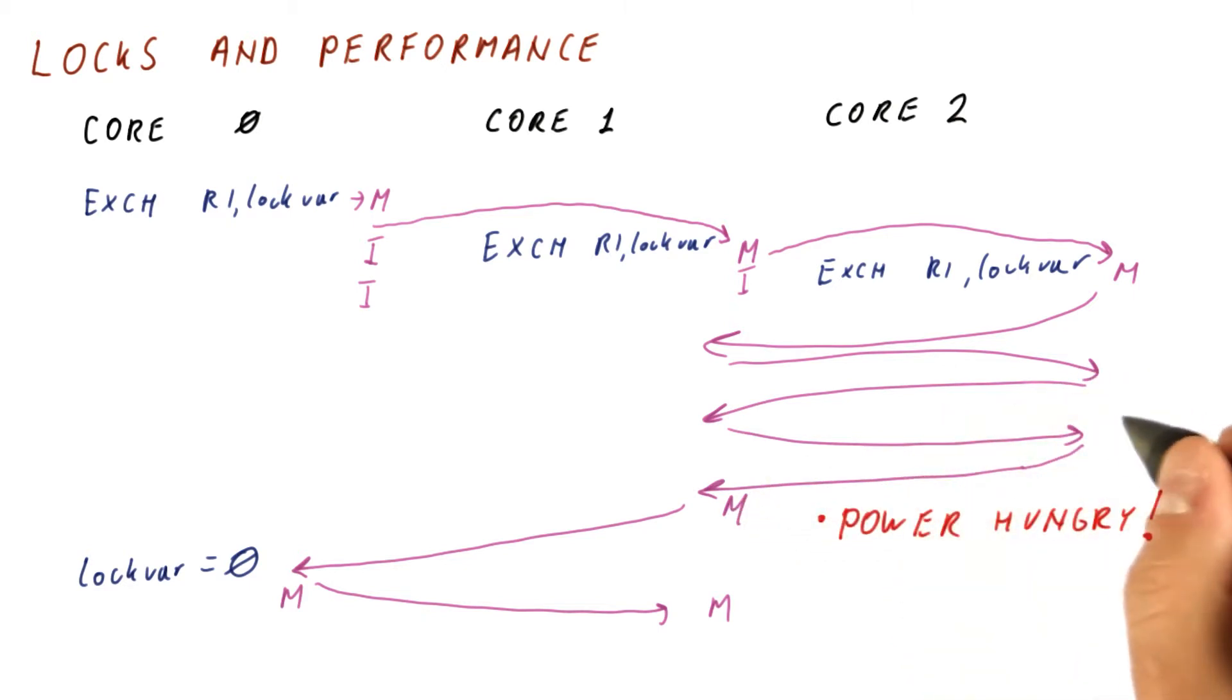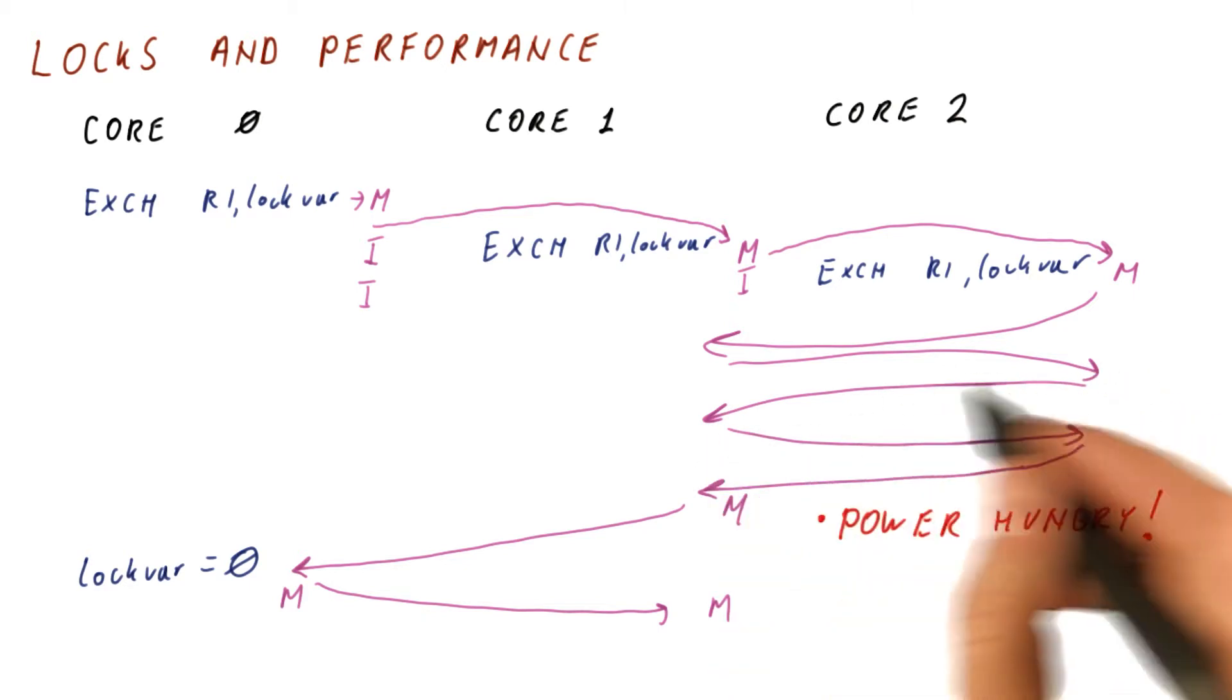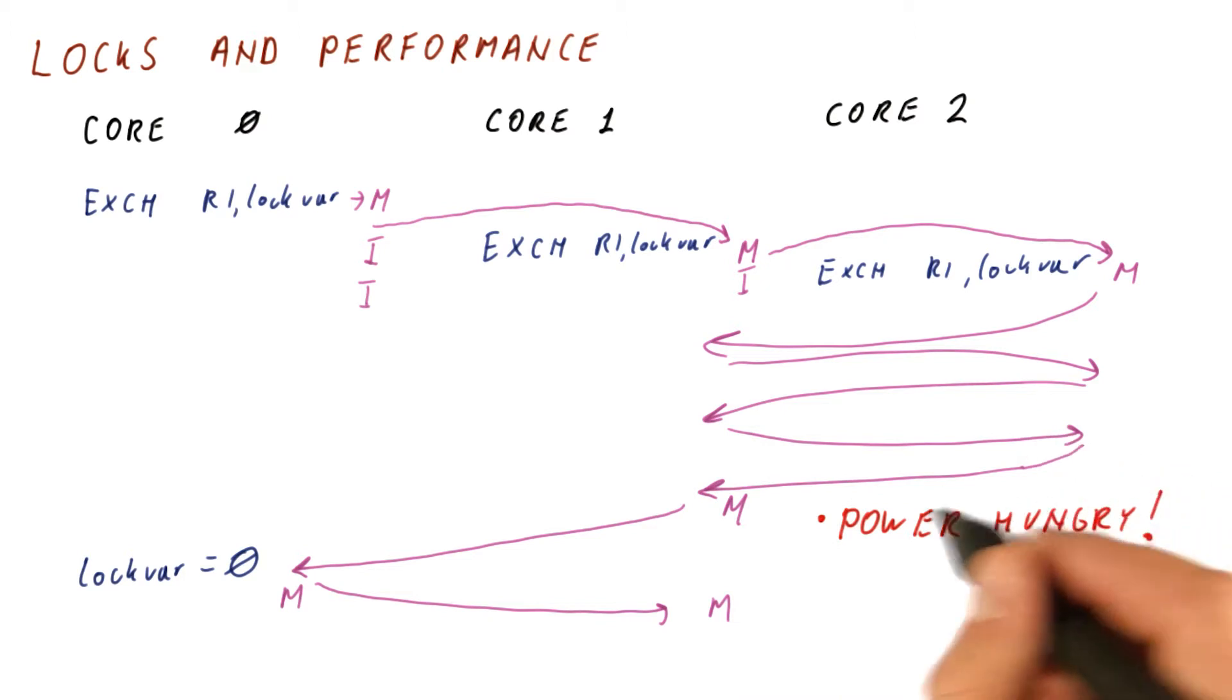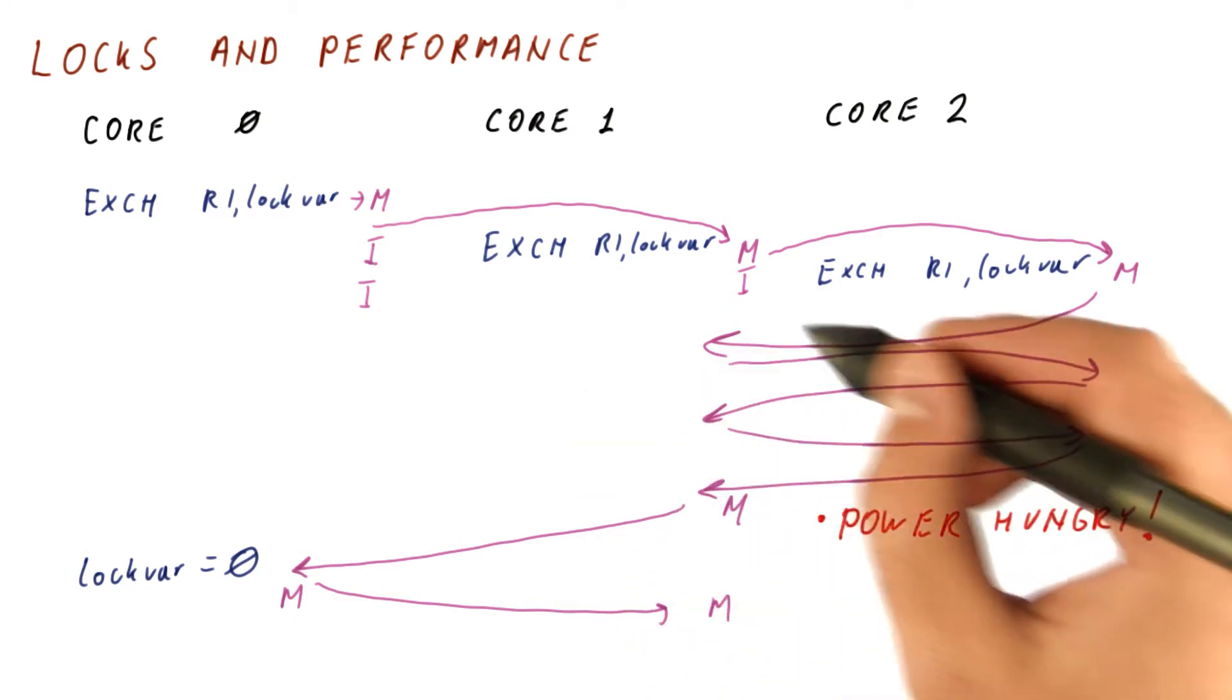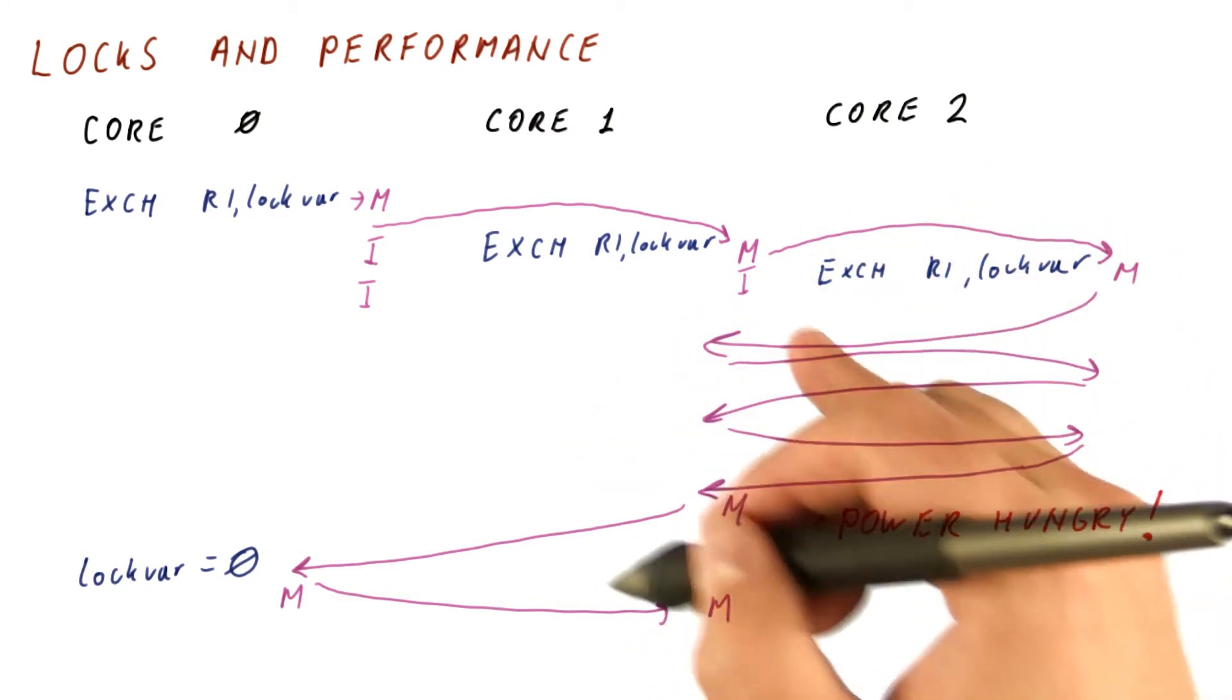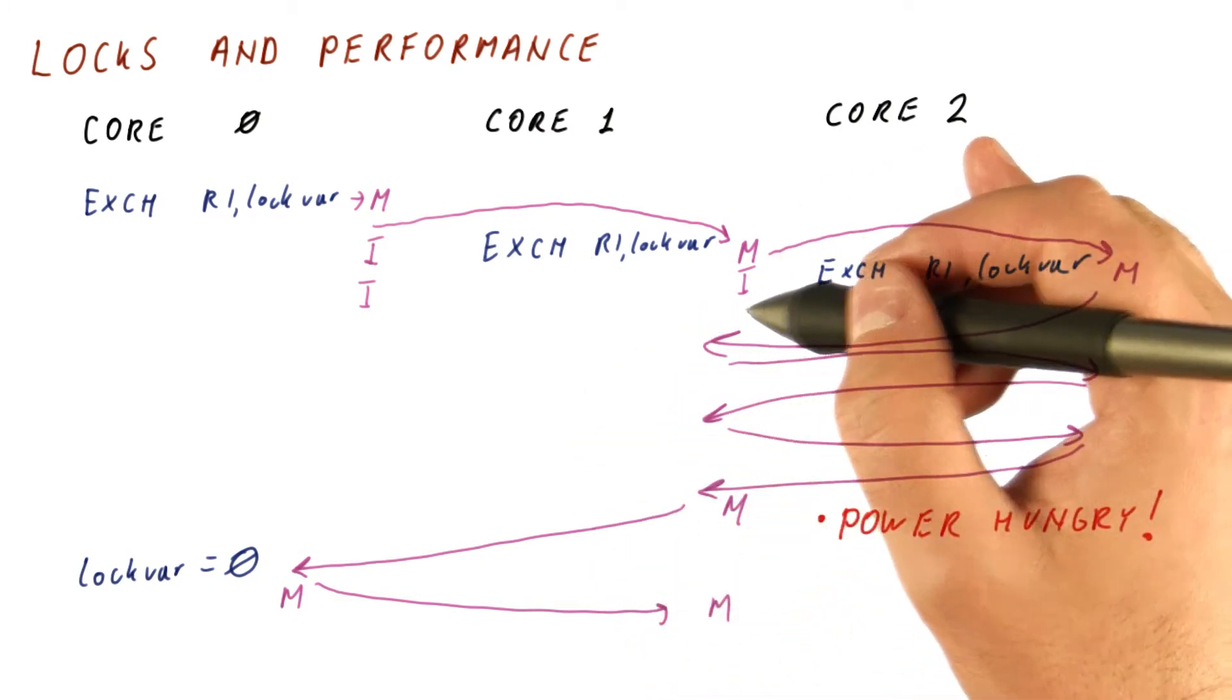This is very power hungry because these movements of data between caches are going to cost us a lot of energy per transfer. And also, this activity keeps the interconnect between the cores busy, for example, the shared bus.